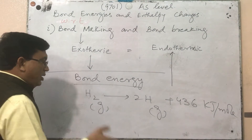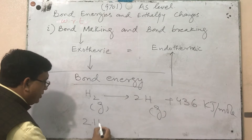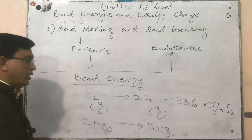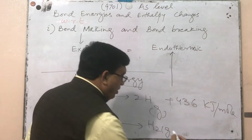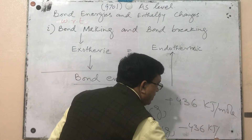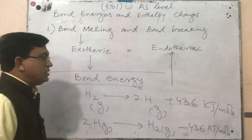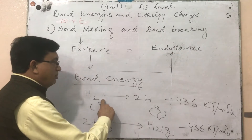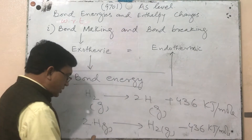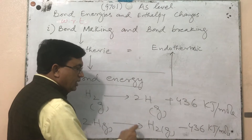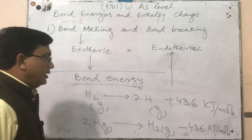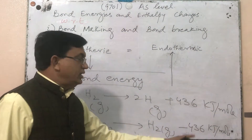On the other hand, if two moles of hydrogen atoms combine to form one mole of molecular hydrogen gas, the same amount of energy — 436 kJ/mol — is released. When bonds are broken, the process is endothermic (positive sign); when bonds are formed, energy is released, indicated by a negative sign — an exothermic process.